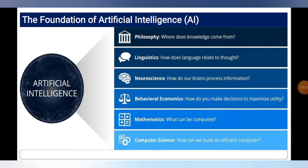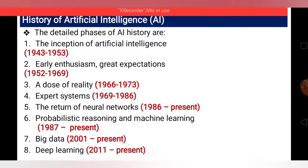The foundation of artificial intelligence is shown with a big black circle. The foundations listed are: philosophy — where does knowledge come from; linguistics — how does language relate to thought process; neuroscience — how do our brains process information; behavioral economics — how do you make decisions to maximize utility; mathematics — what can be computed; and computer science — how can we build an efficient computer. This is the general foundation of artificial intelligence.